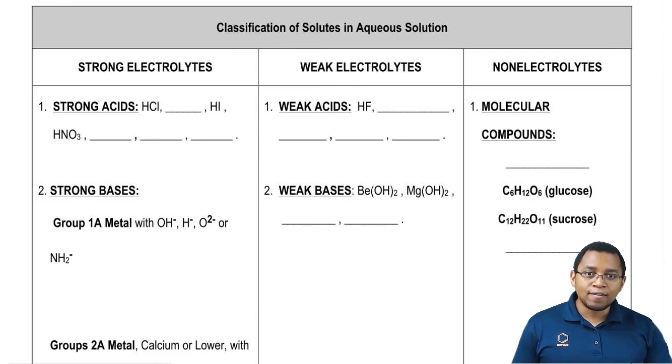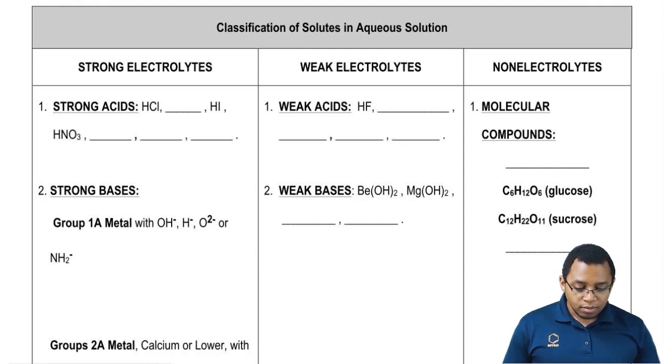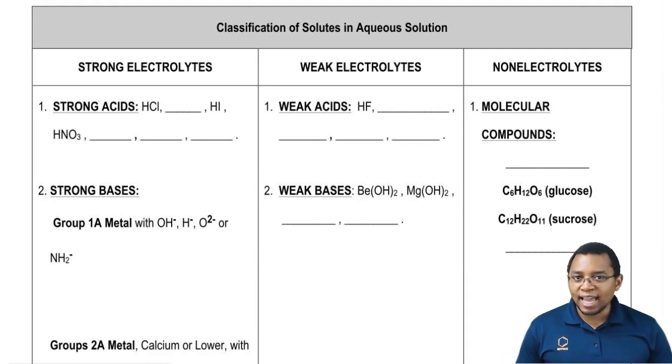First things first, we have our strong acids. Strong acids are considered strong electrolytes, so they break up completely when they're dissolved in water. The examples here, we have HCl, we have a blank, then we have HI.